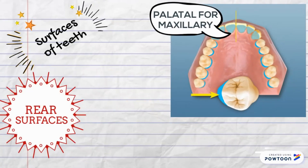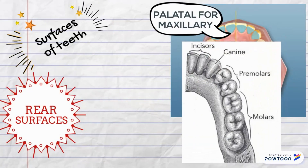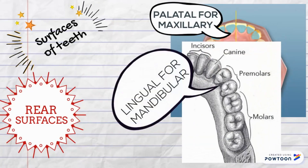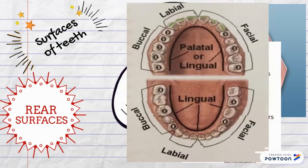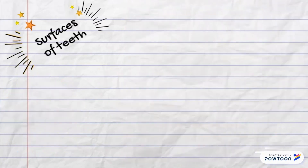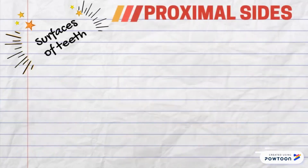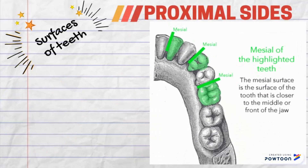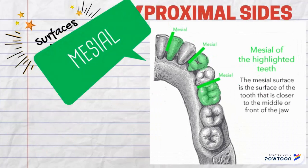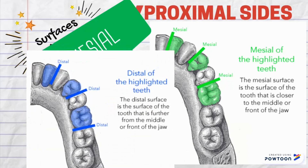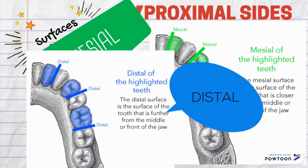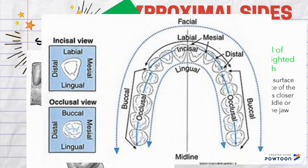And lingual surfaces for the mandibular, or the lower jaw. It's important to clean in between the teeth, so let's speak about the proximal surfaces. The proximal surfaces are divided into mesial — which is the surface closer to the midline of the jaw — and distal — which is the surface away from the midline of the jaw, but between the teeth. Make sure you clean them too!